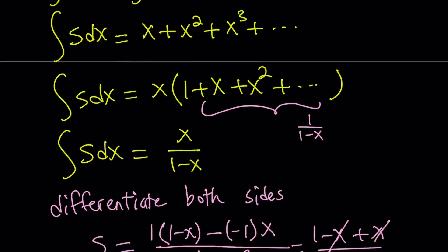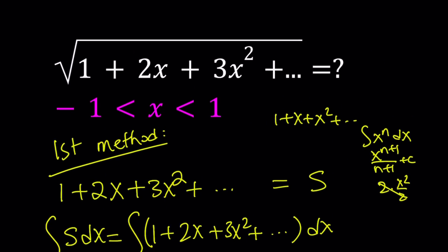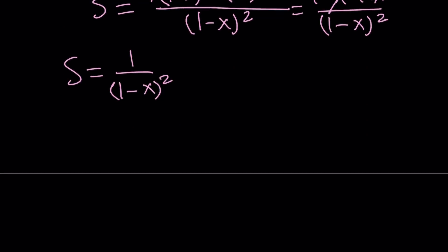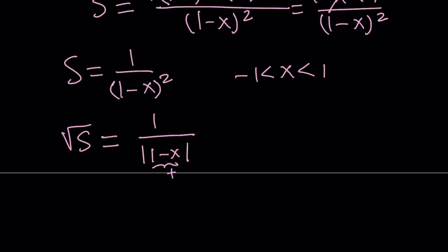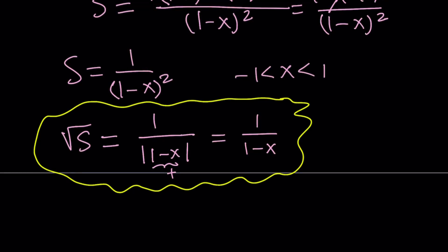Remember, our goal is to find the square root of S. So let's go ahead and square root both sides. We have to use absolute value, but recall our given conditions: x must be between negative 1 and 1, so 1 minus x is a positive quantity, and the absolute value sign is not going to change anything. Therefore, square root of S is going to be 1 over 1 minus x. That's our answer for method one.